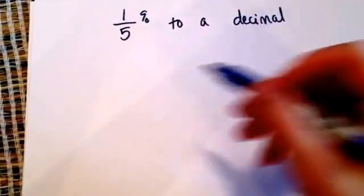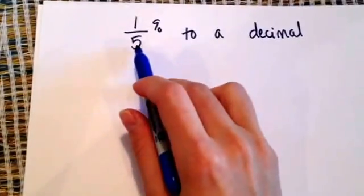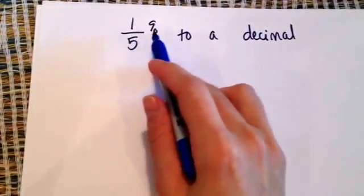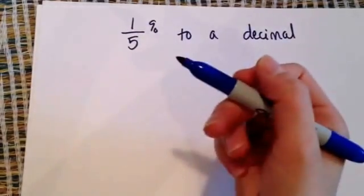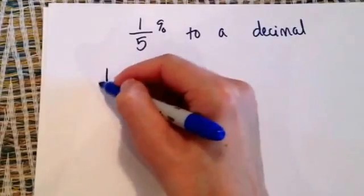Okay, here's a tricky problem: 1/5% to a decimal. The first step is we need to change this fraction to a decimal because a fraction as a percent doesn't even make sense. So let's change 1/5 to a decimal to start.